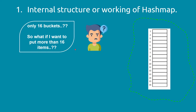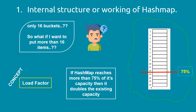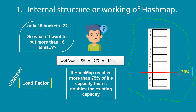This is where the concept of load factor comes in. If the HashMap reaches more than 75% of its capacity, it will double the capacity. So if 12 buckets are already full — 12 is 75% of 16 — and we try to put an item in the 13th bucket, the capacity will be doubled from 16 to 32. The load factor of a HashMap is 75%, also called 0.75 or 3/4.